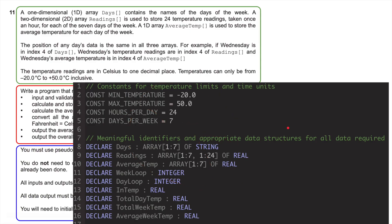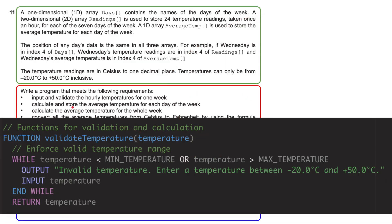I'm going to do some validation because the question says input and validate the hourly temperatures for one week. I've created a function called 'validate_temperature'. Basically, while the temperature inputted is less than the minimum temperature or greater than the maximum temperature, it outputs 'Invalid temperature — enter a temperature between' those two numbers and re-prompts for input. Once valid, it returns the temperature. That's my first function.